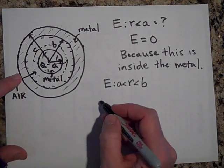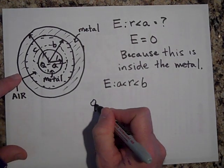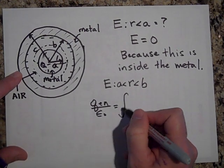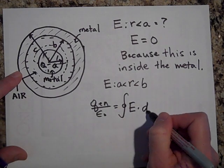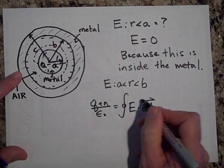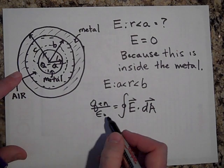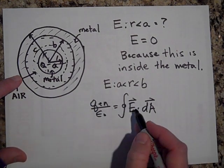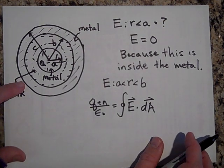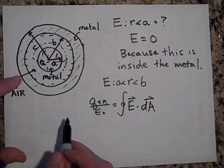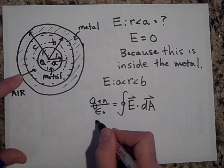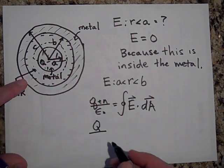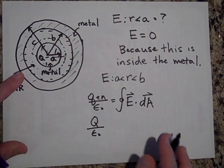So I'll go Q enclosed over epsilon naught is equal to the closed surface integral of E dot dA. Remember, two ways to find the flux through a closed surface is this way and this way. Well, the net charge enclosed is Q. That's all the charge that's enclosed and then over epsilon naught. So I'm done with the left side.